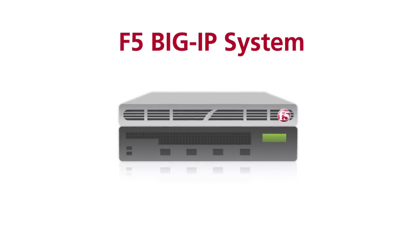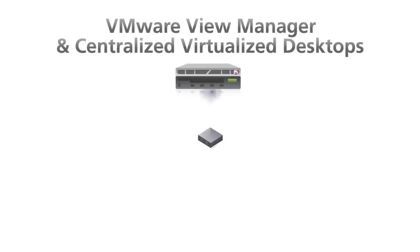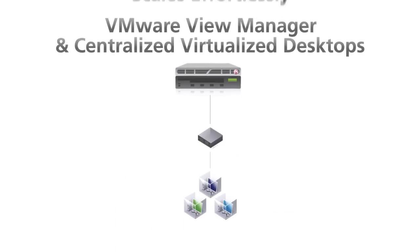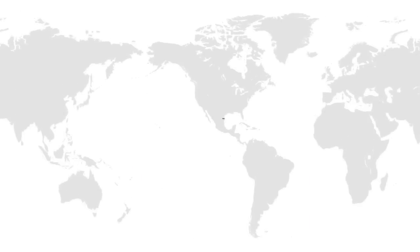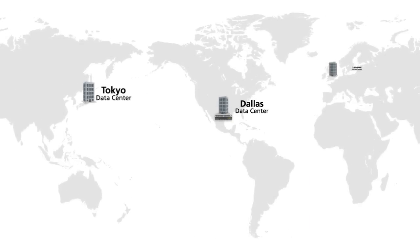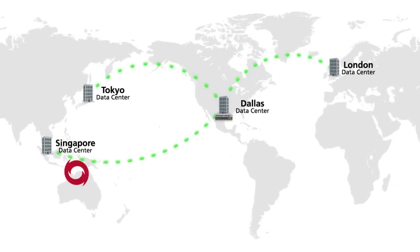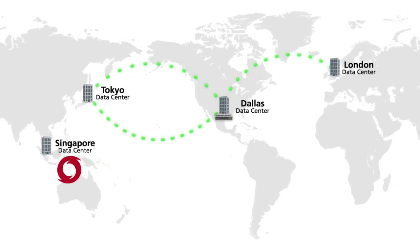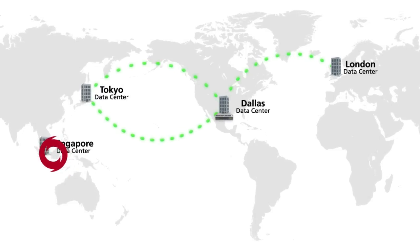Third, F5 BigIP helps VMware View scale effortlessly to make it easy for your IT to create very large deployments. And finally, F5 BigIP provides resiliency by seamlessly routing users away from data centers experiencing planned or unplanned downtime.